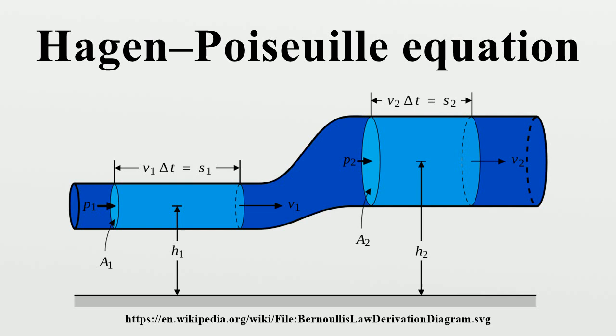In standard fluid dynamics notation, or, where is the pressure loss, is the length of pipe, is the dynamic viscosity, is the volumetric flow rate, is the radius, is the diameter, is the mathematical constant pi, is the velocity.